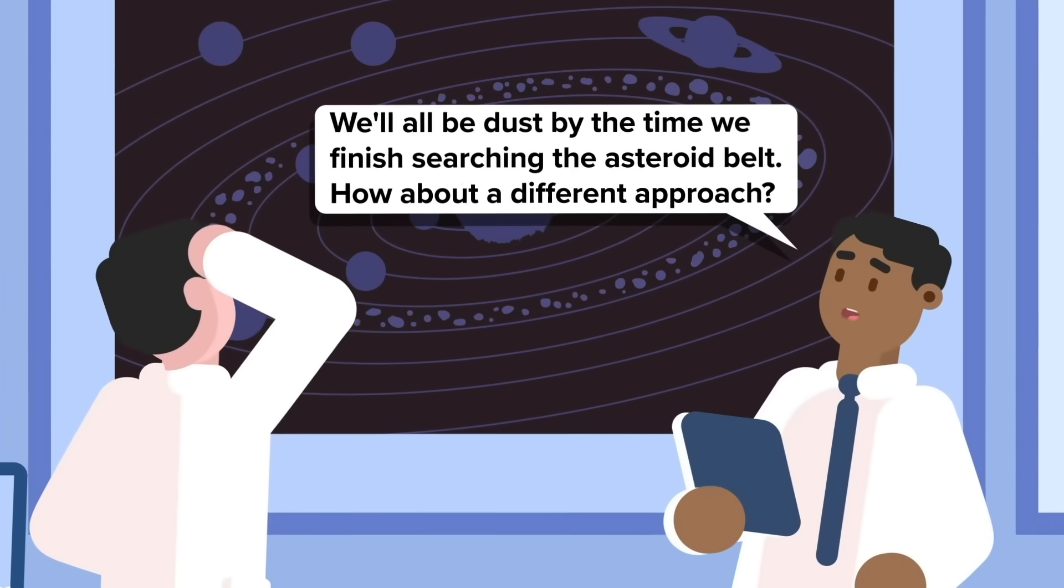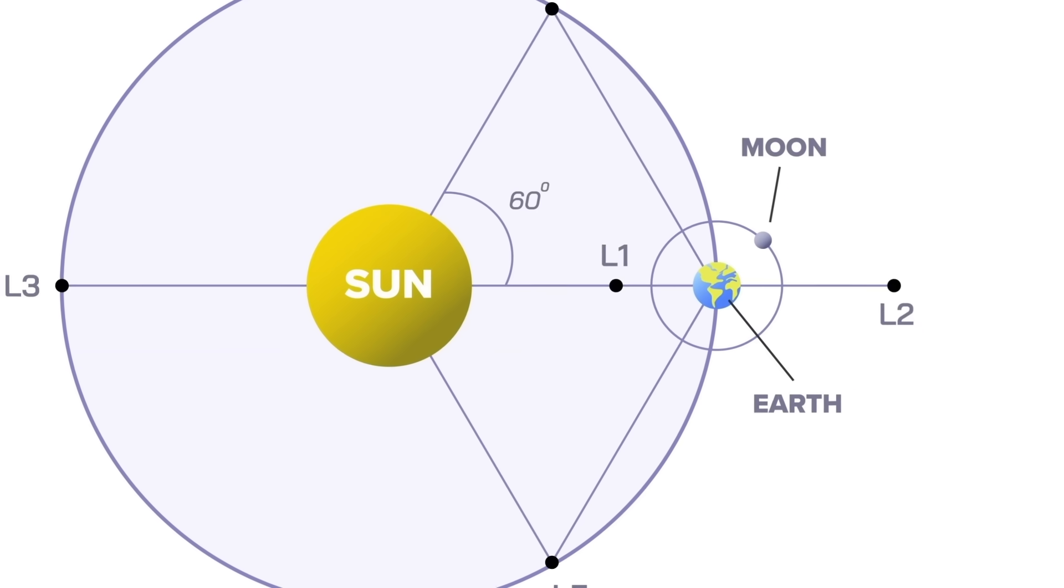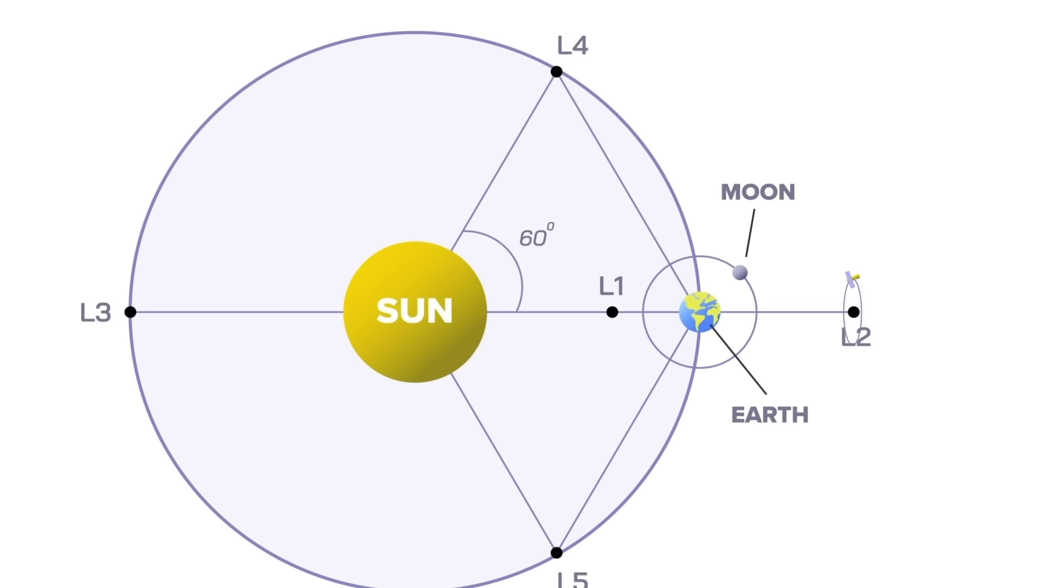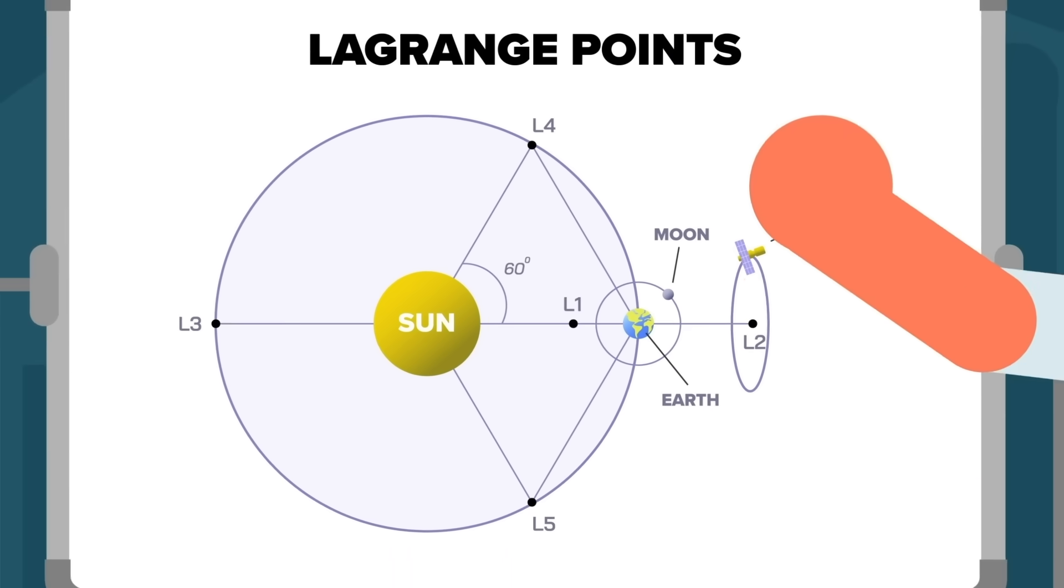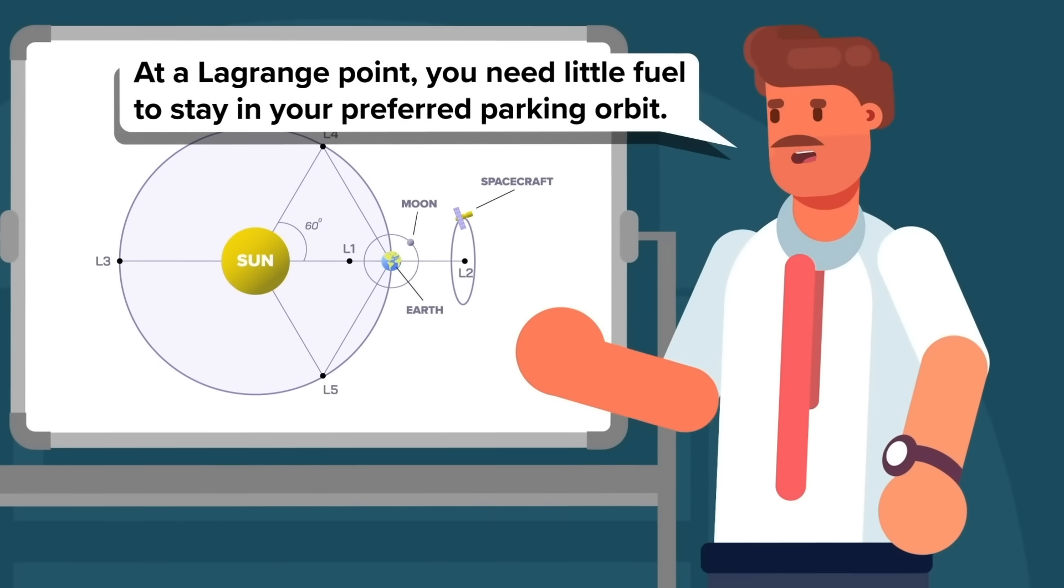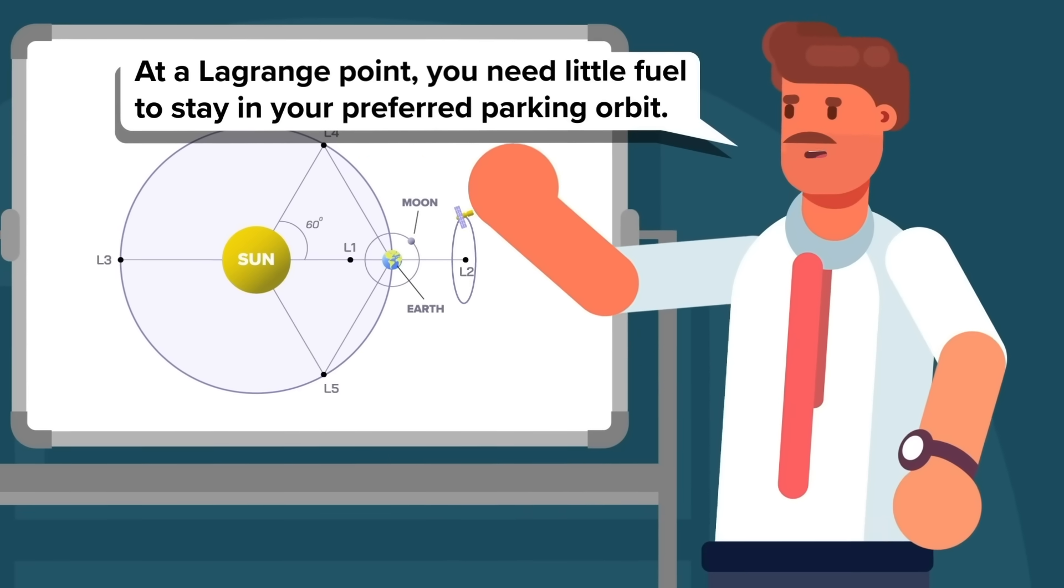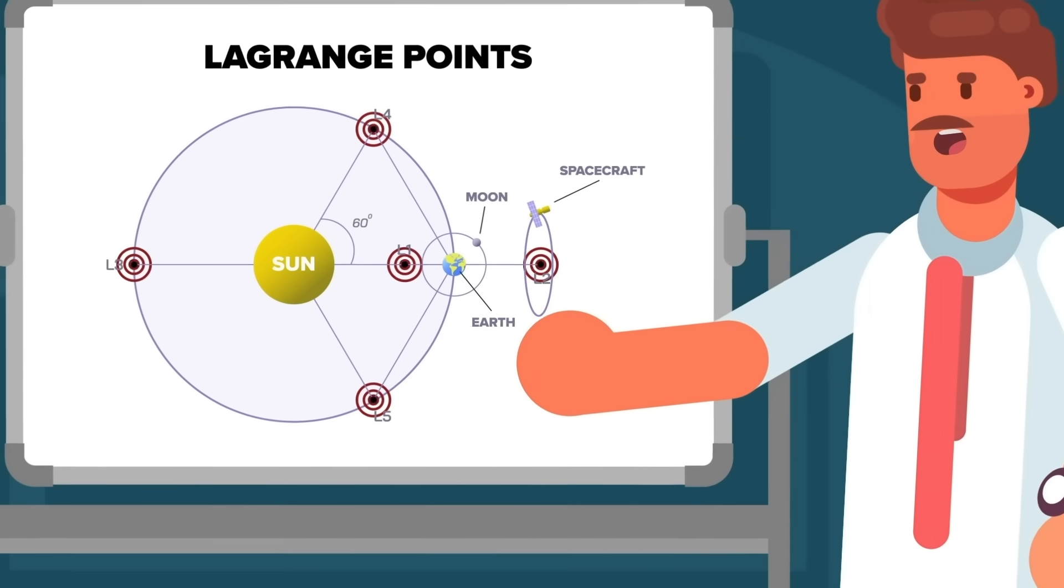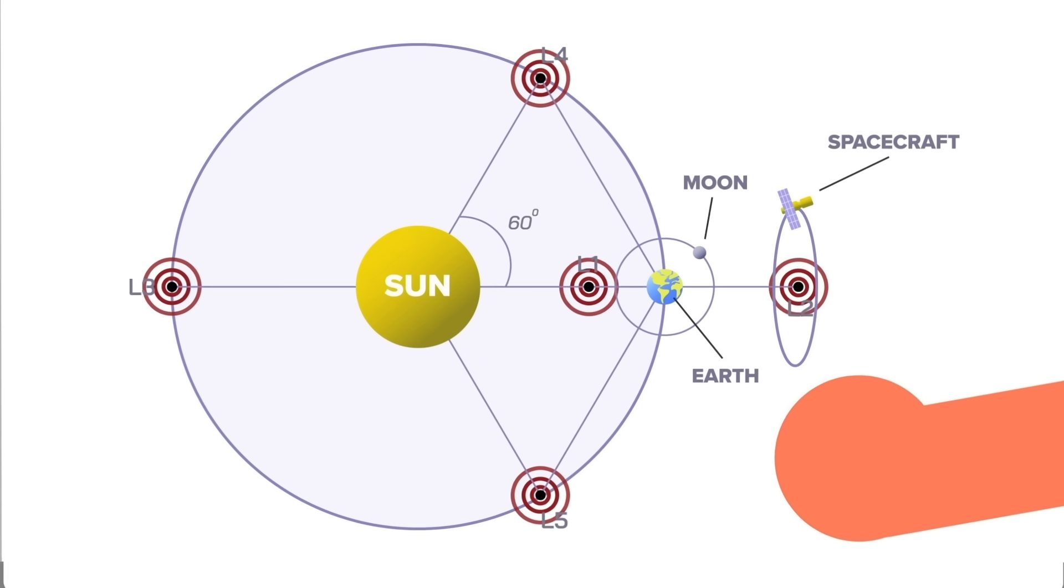Luckily, there's another place we could look that would be more obvious. Lagrange points are places in a two-body system such as the Earth and the Sun, where the gravitational forces of the two can create a state of equilibrium for smaller objects, such as satellites. Normally, you're either going to be orbiting the Earth or go out far enough and you'll be orbiting the Sun. At a Lagrange point, though, you can remain relatively stationary, which greatly minimizes how much fuel you need to burn to maintain your desired orbit. The Earth has five Lagrange points, making them ideal candidates to look for alien technologies spying on us.